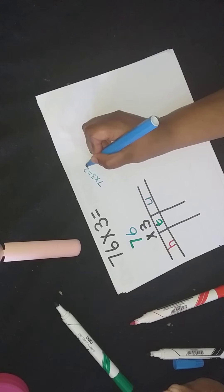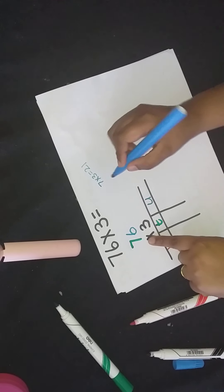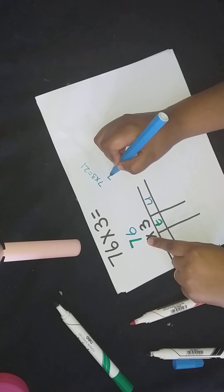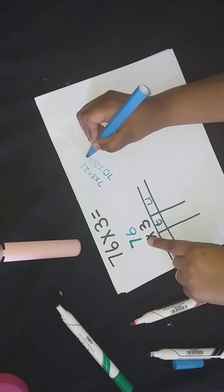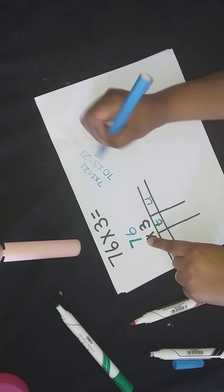Remember it's tens. And there will always be a zero. That's 70 times 3 is equal to 210. Don't forget your zero. Two hundred and ten.